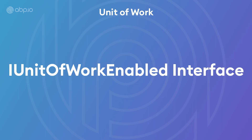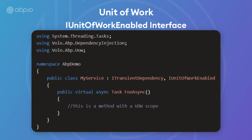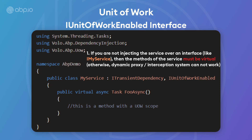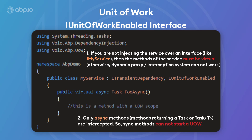The first and easiest way is to use the IUnitOfWorkEnabled interface. Just by implementing the IUnitOfWorkEnabled interface, the methods of the service or any class derived from it will be a unit of work. However, there are some rules that should be followed. If you're not injecting the service over an interface like IMyService, then the methods of the service must be virtual — otherwise, the dynamic proxy and interception system won't work. Also, only asynchronous methods are intercepted; synchronous methods cannot start a unit of work. Note that if a method is called inside a unit of work scope, it already participates in that unit of work scope without needing to implement the IUnitOfWorkEnabled interface or any other configuration.